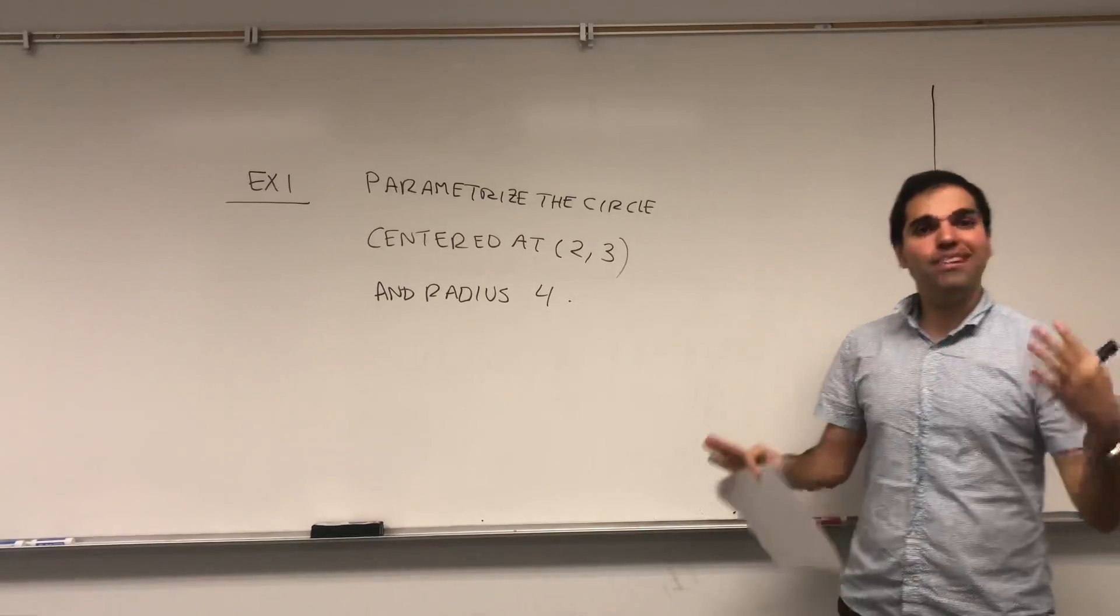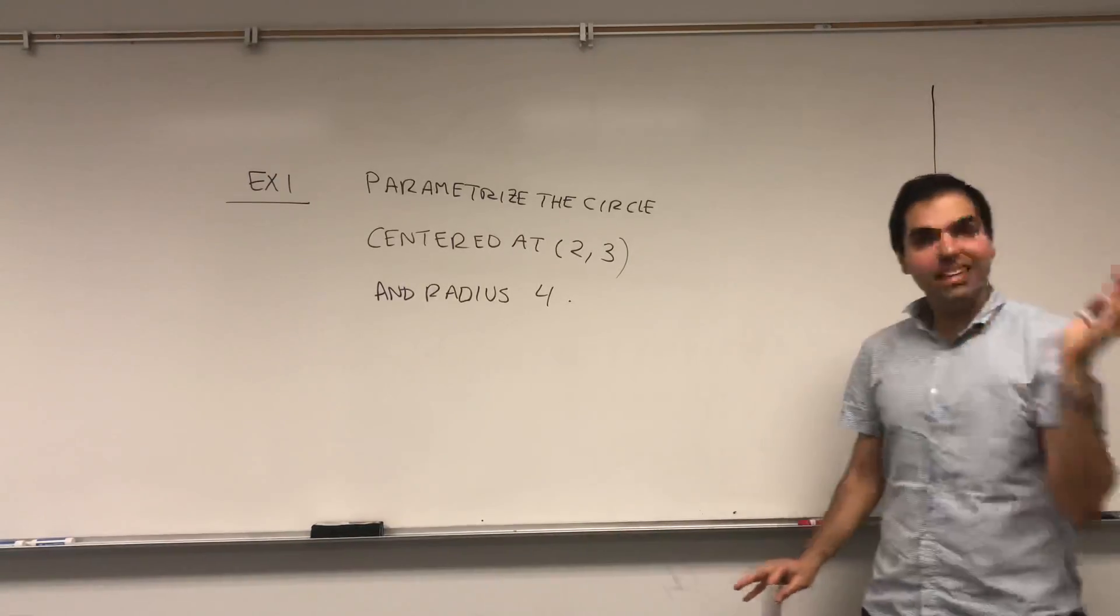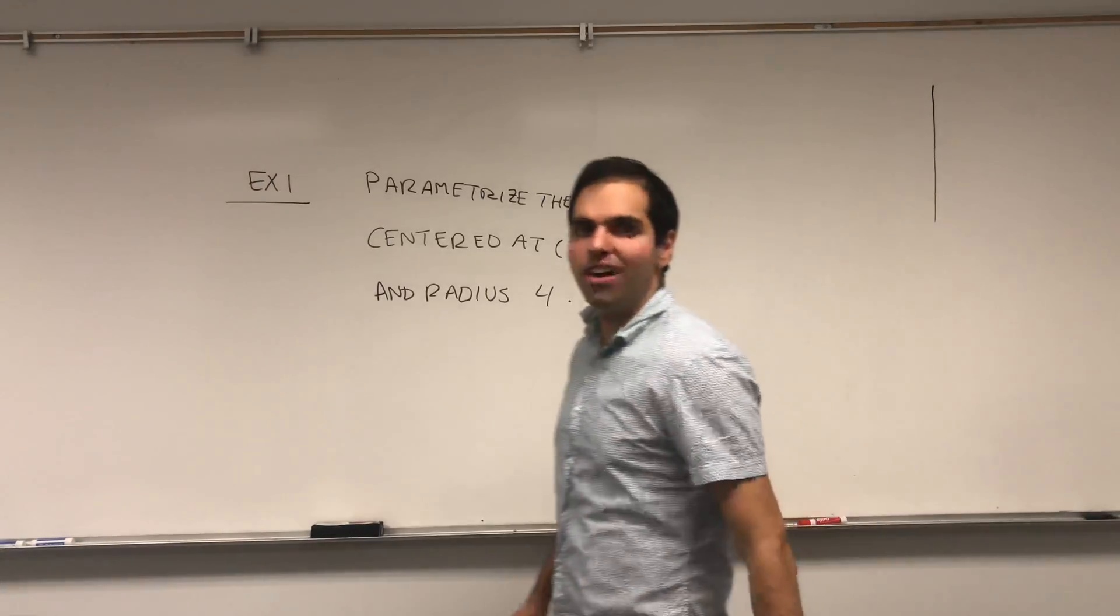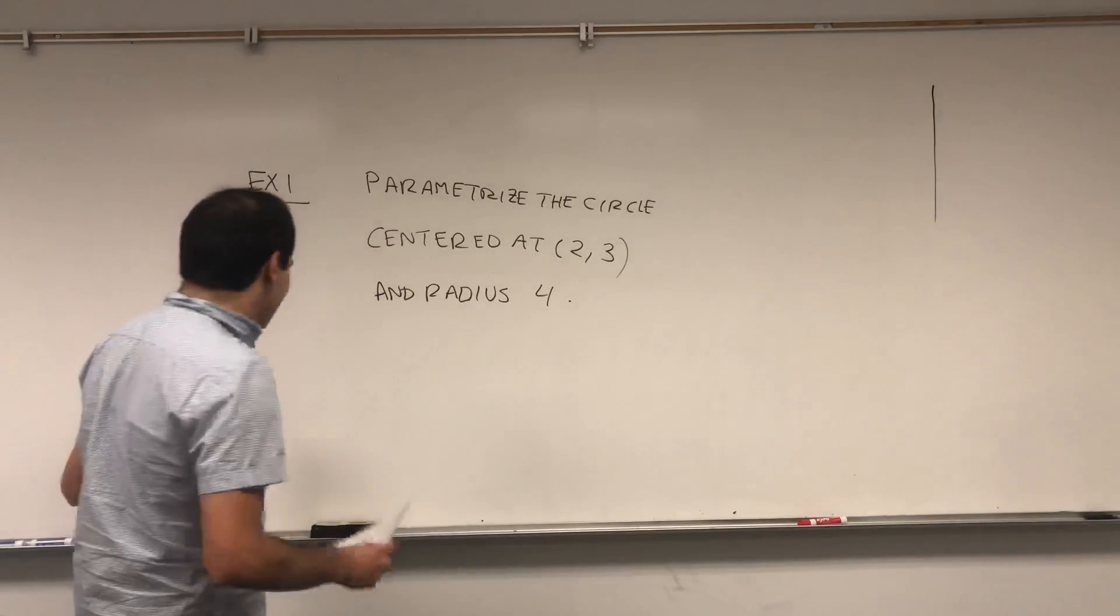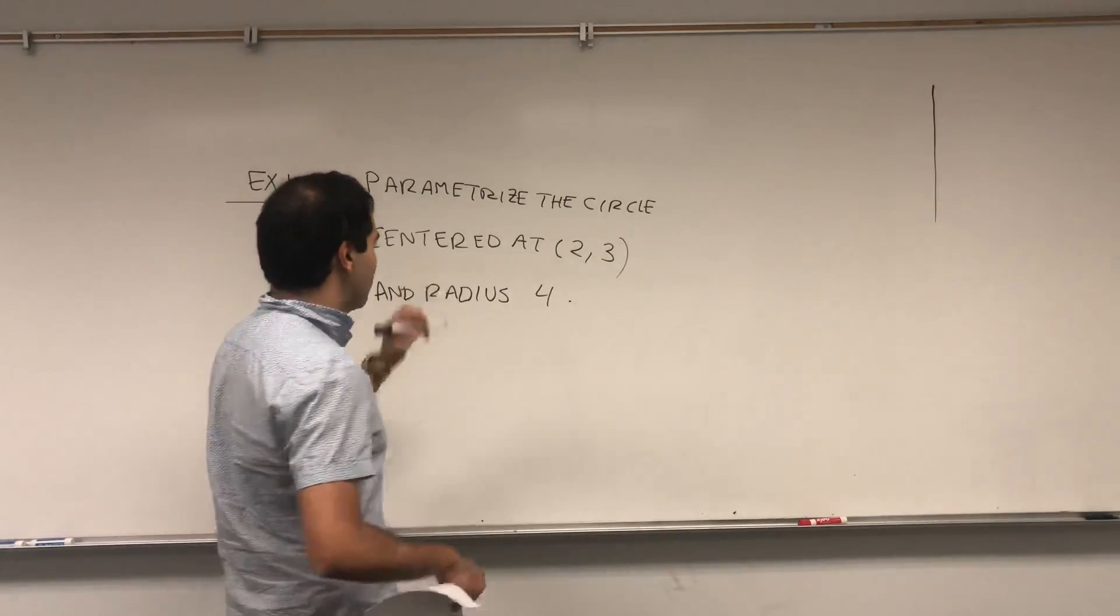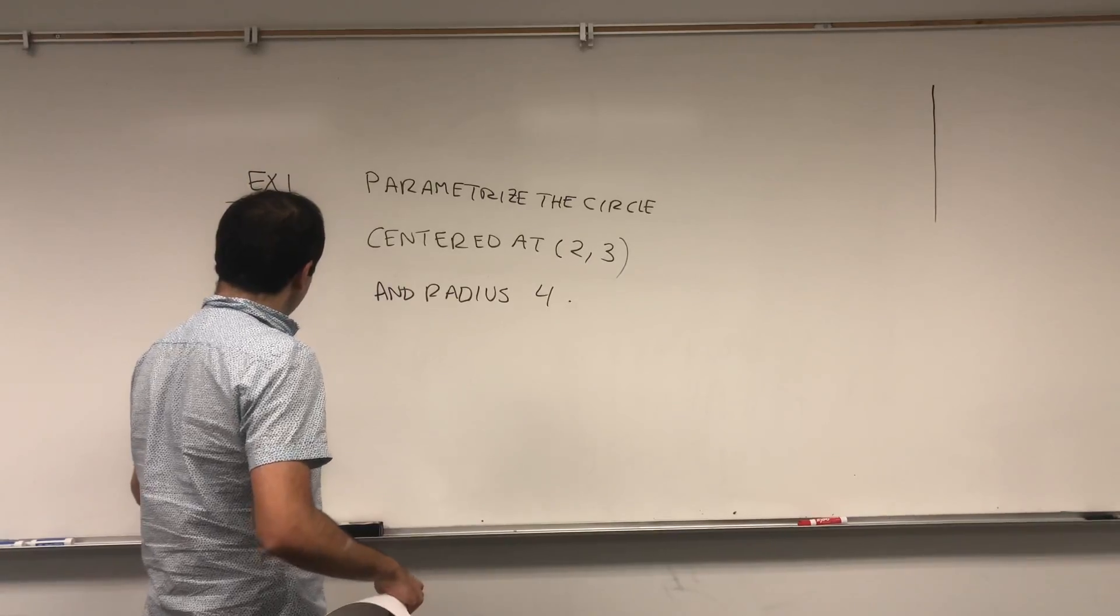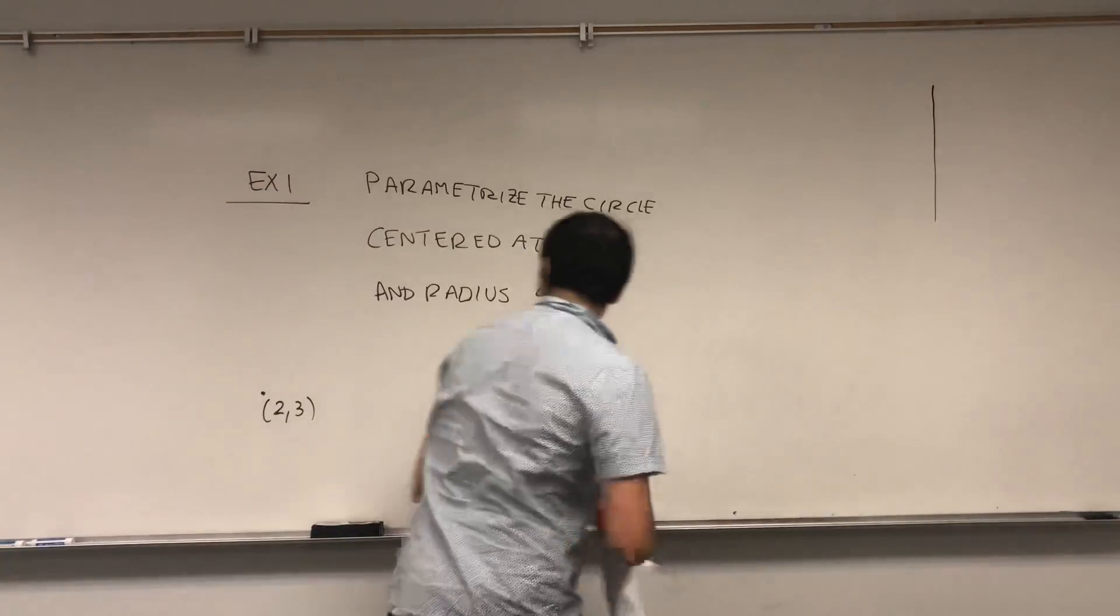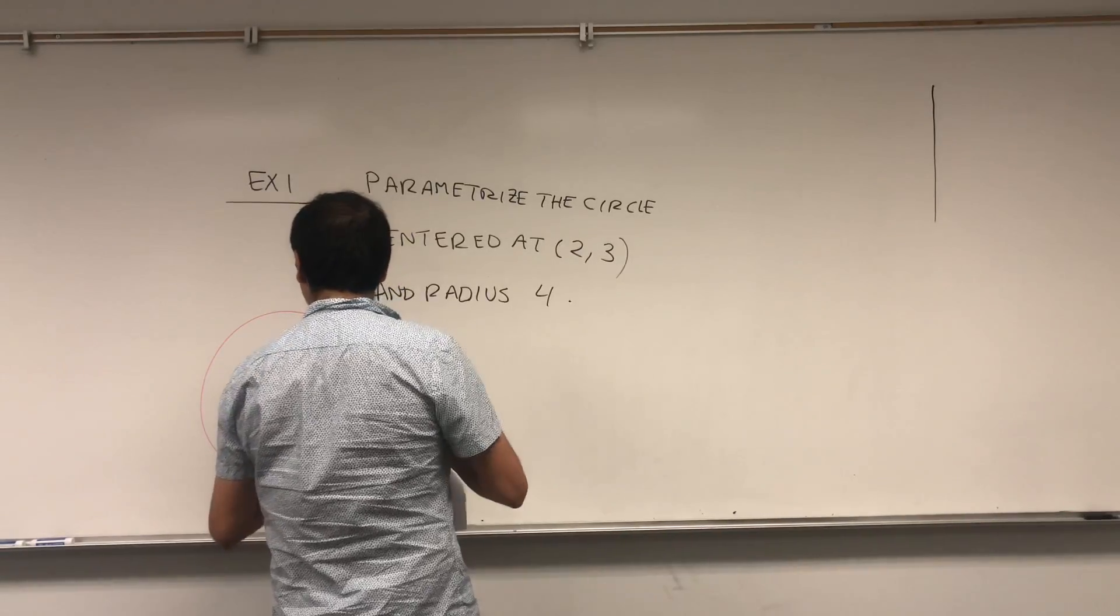I'm not writing this, but I'm assuming it's in the counterclockwise direction, so unless stated otherwise, I assume it's counterclockwise, unless, again, I'm evil and I say it's clockwise. So just to remind you, let's draw this circle, 2, 3, 4. So 2, 3 and radius 4. Nice big and round circle.